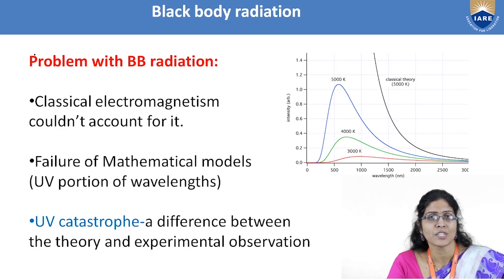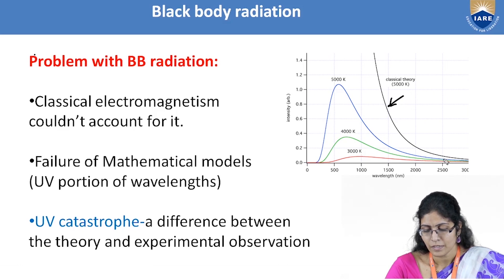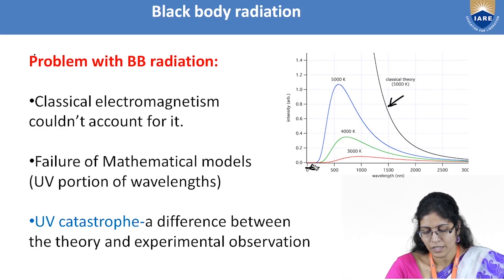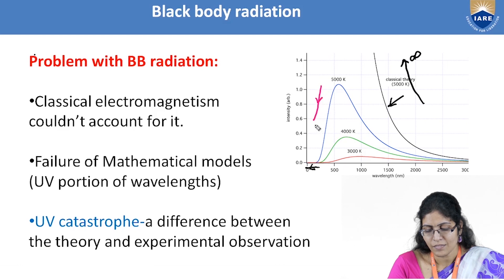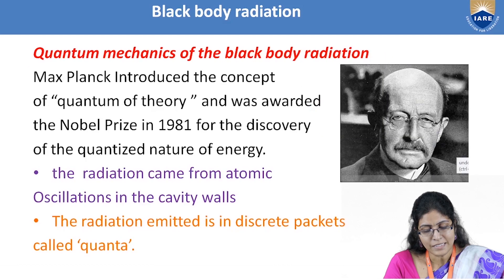What is the problem with black body radiation? Classical electromagnetism couldn't account for it. Many mathematical physicists tried to fit the experimentally observed values but failed. For example, the Rayleigh-Jeans law was able to give a curve that matched in the higher wavelength range, but they could not predict what happens at lower wavelengths — they thought the energy would just rise to infinity. They were unable to predict that as temperature rises, the peak wavelength would shift to lower values. This contradiction between theoretical results and experimental observation is known as the ultraviolet catastrophe.